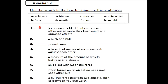Number two: a push or pull. The answer is B — force. Number three: to push away. That is F — repel. Repel means pushing away, not attracted to the magnet. Number four: a force that occurs when objects rub against each other. The keyword is 'rub against each other' — so the answer is C — friction. Number five: a measure of the amount of gravity between two objects. Measure is the keyword, and it's measuring gravity — so the answer is H — weight.